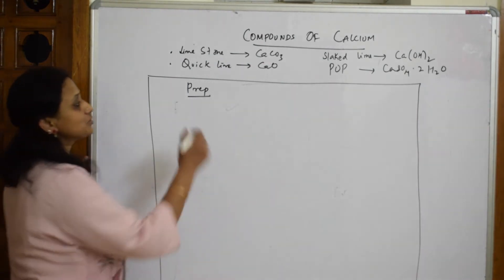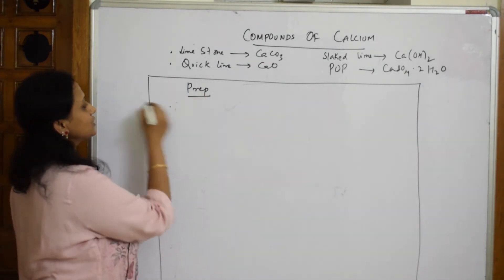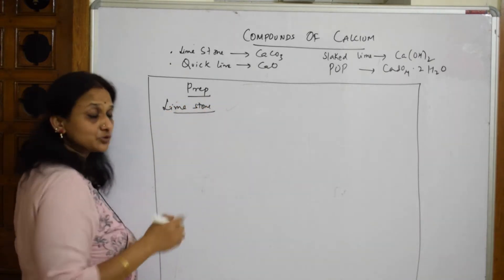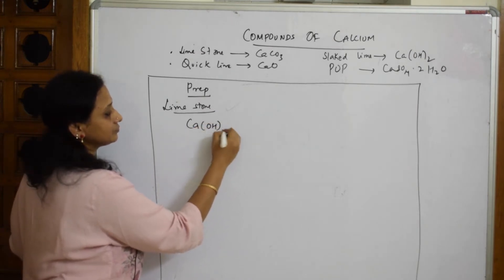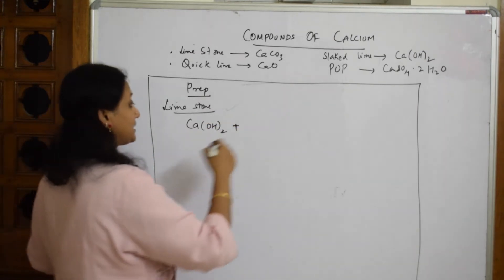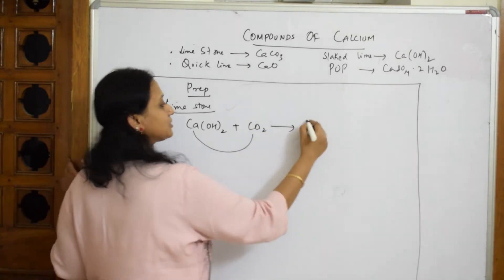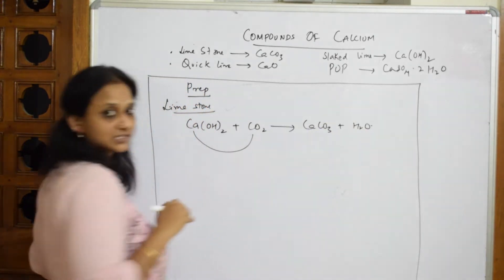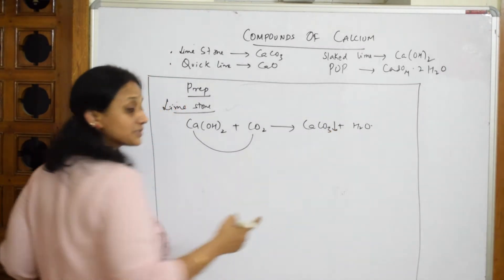To prepare limestone (calcium carbonate), we take slaked lime and add carbon dioxide. Calcium carbonate is produced along with water, and it comes out as a precipitate.